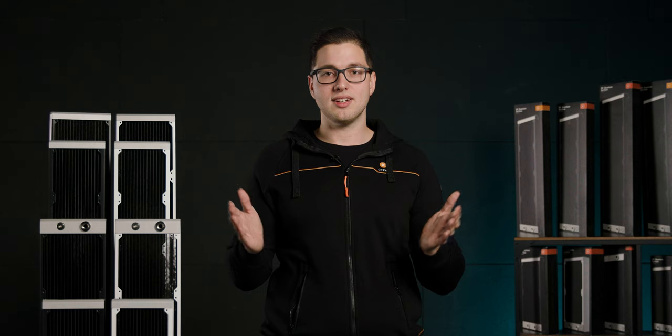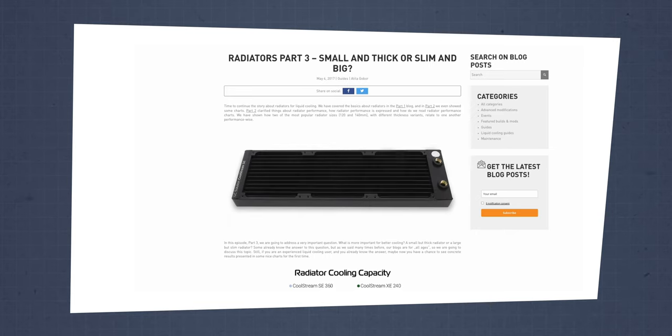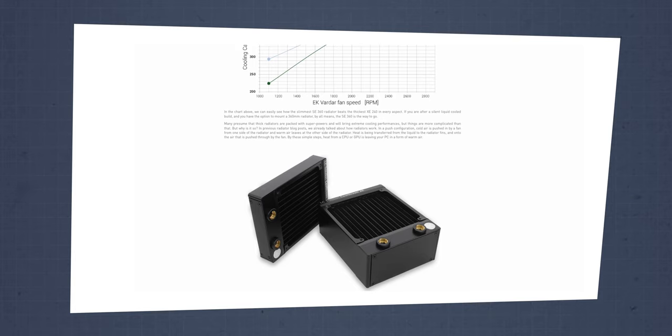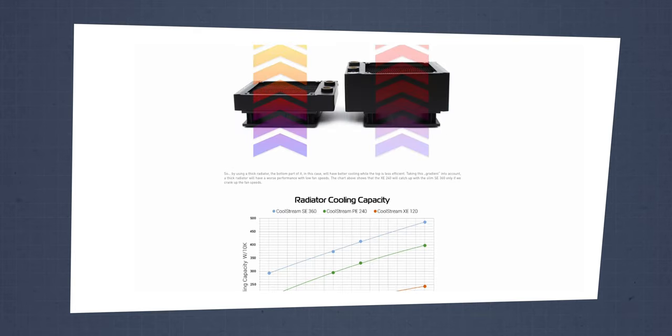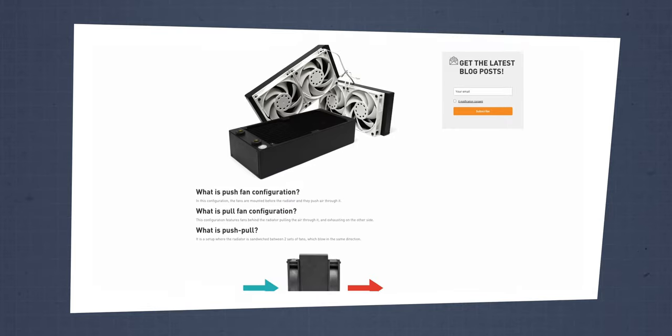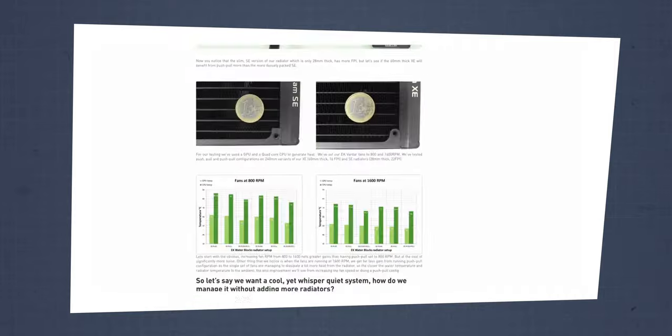Now for the final stretch, let's answer some frequently asked questions. Longer or thicker radiator — which is better? The short answer is that a longer radiator is a better option than a thicker one that is shorter in length. We have a whole blog post that explains this in detail — you can find the link in the description below. Should I choose push, pull, or push-pull setup? In short, the push-pull fan setup is better, but this means you need some extra space for the second row of fans. You can read more on this subject in another blog post linked below.